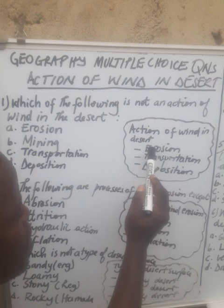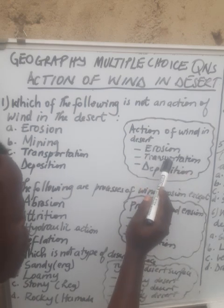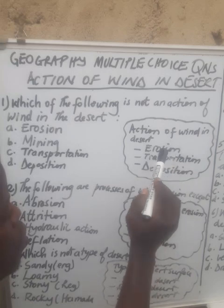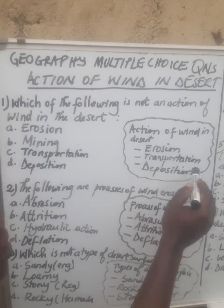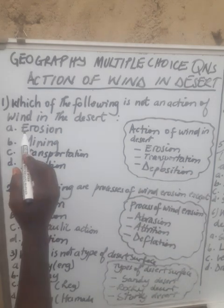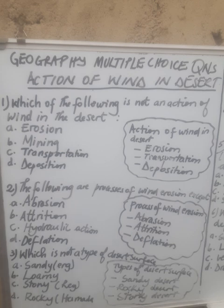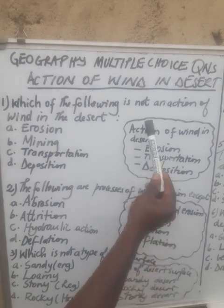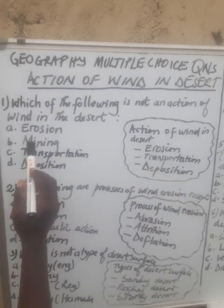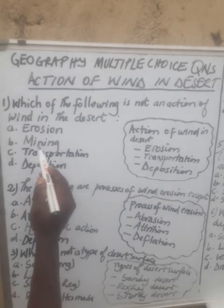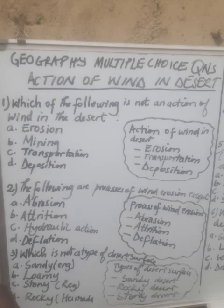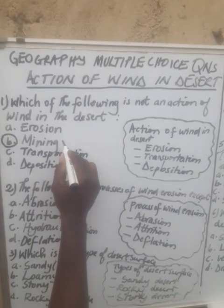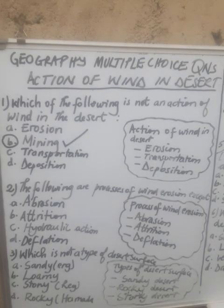So the three main actions of wind in desert are: erosion, which is destruction; transportation, which is carrying out eroded materials; and deposition, which is laying down those transported materials. Looking at the options — erosion, mining, transportation, and deposition — the correct answer is mining, because mining is not an action of wind in the desert.